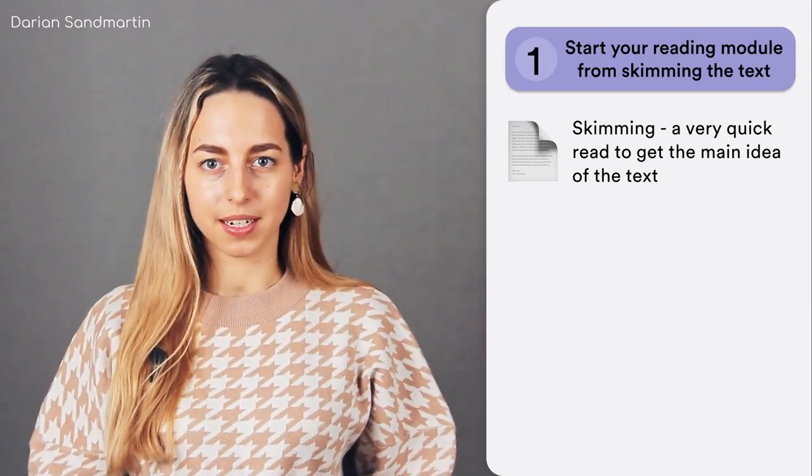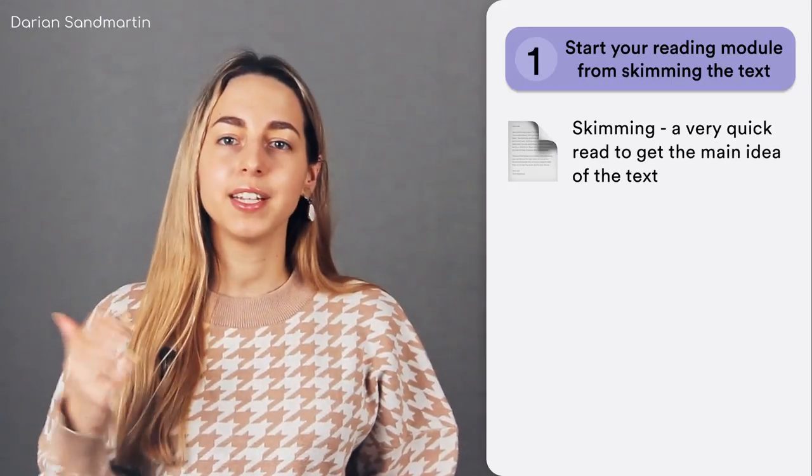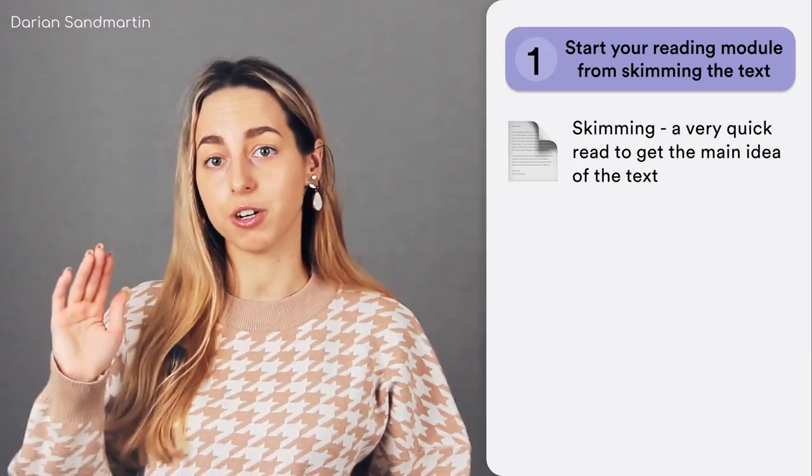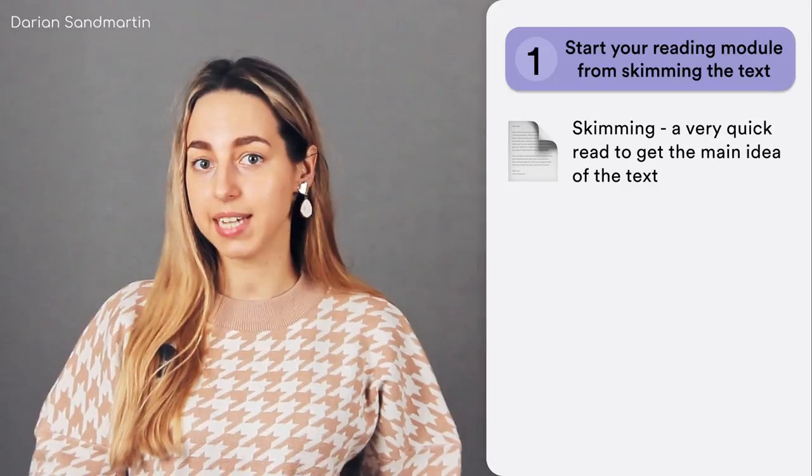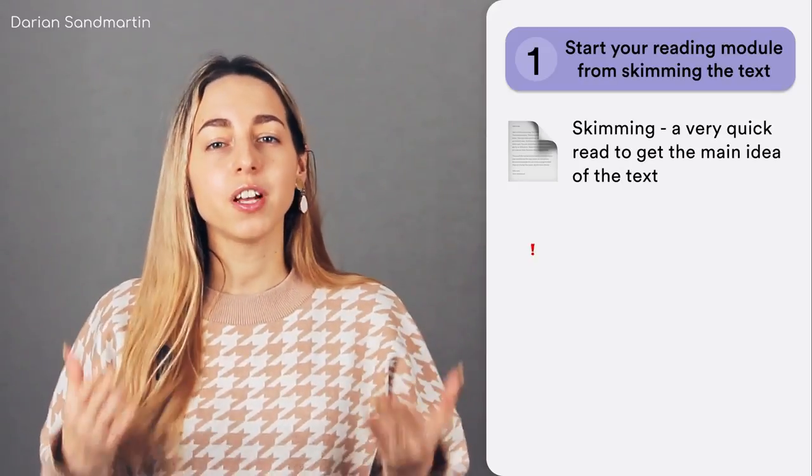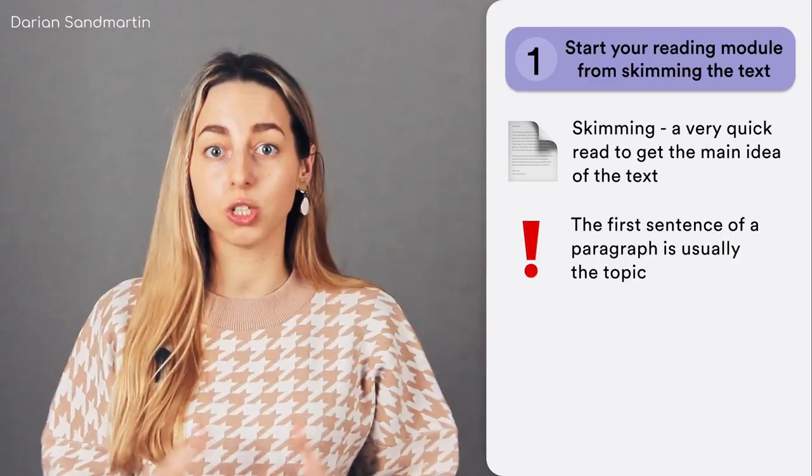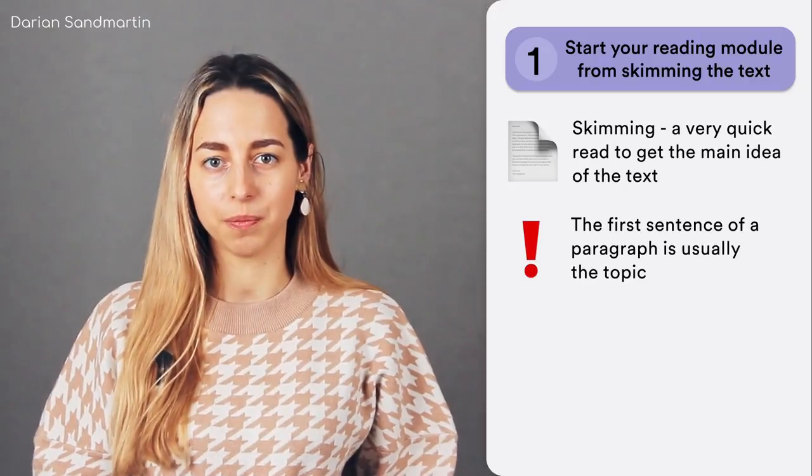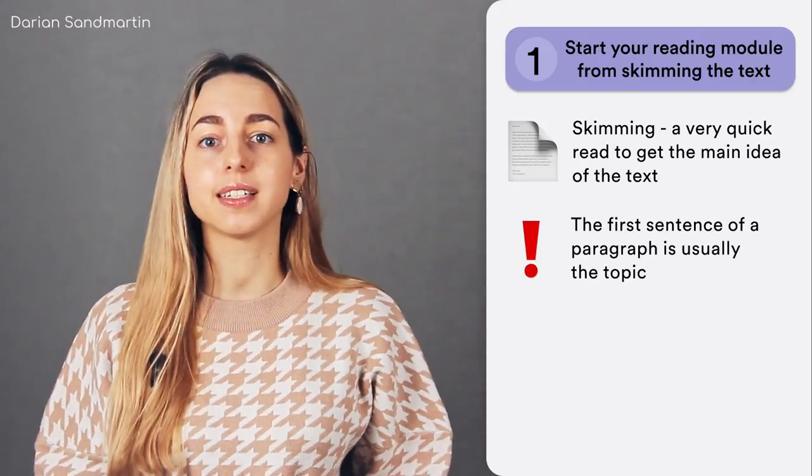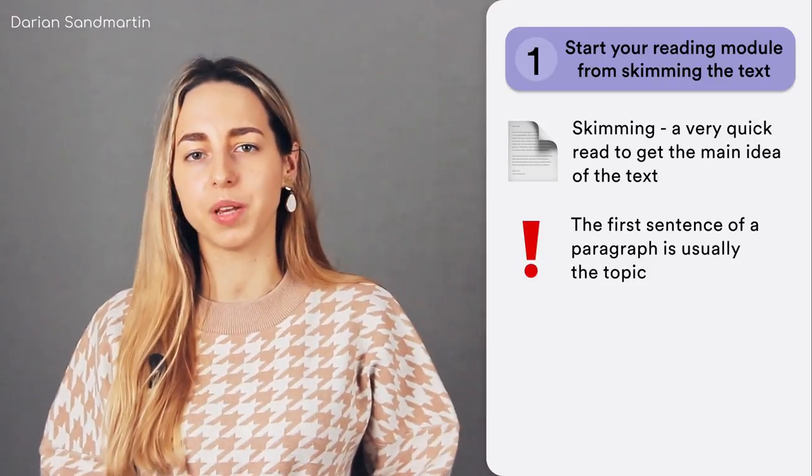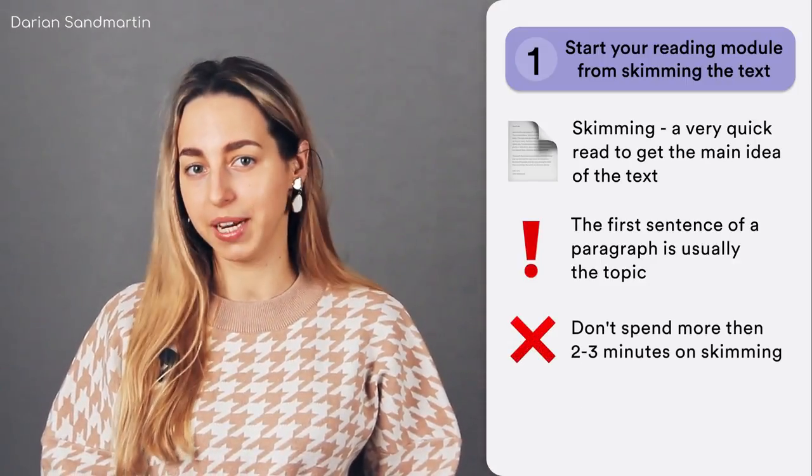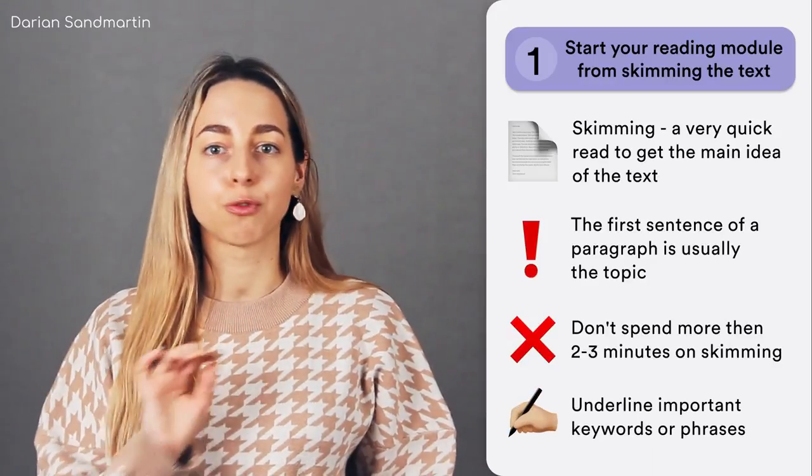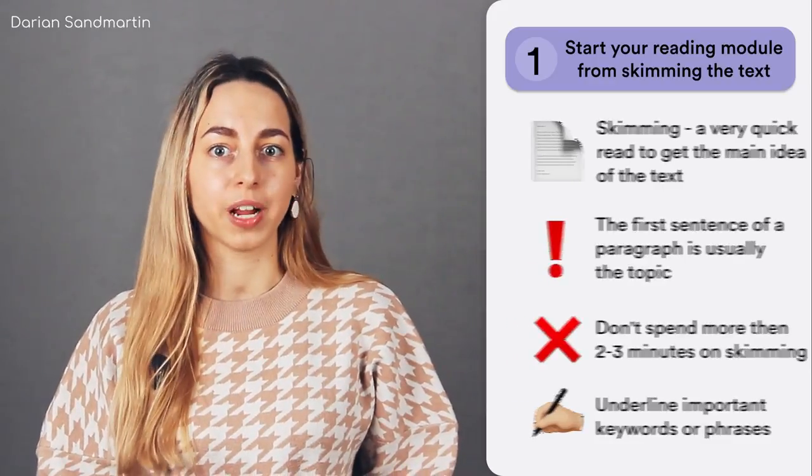I always skim an article before going to the questions. I read carefully the title and then very quickly read the first and last sentences of each paragraph to outline the main characteristics of the text and understand its layout. The first sentence of a paragraph is usually the topic sentence that tells us what the next chunk of the text is about so it's quite valuable. Sometimes the topic sentence is placed at the end and this is why we ought to be cautious. I never spend more than 2-3 minutes on this activity. While skim reading I also underline any keywords or phrases I think may be important for answering questions.